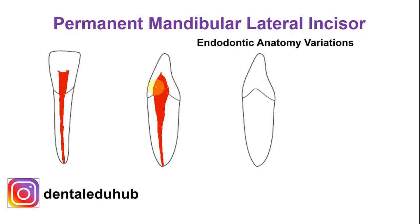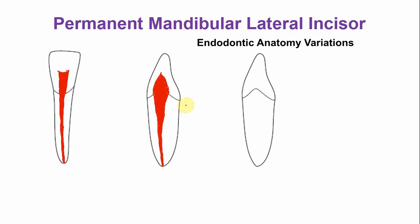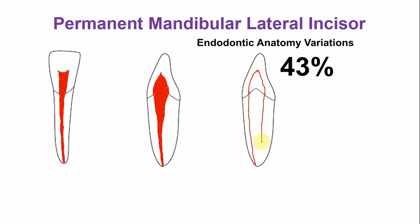In the mandibular lateral incisor, there is a chance of two canals, and the incidence of two canals is higher compared to the central incisor. Around 43% of the mandibular lateral incisors have two canals, and most of these teeth have two apical foramina.